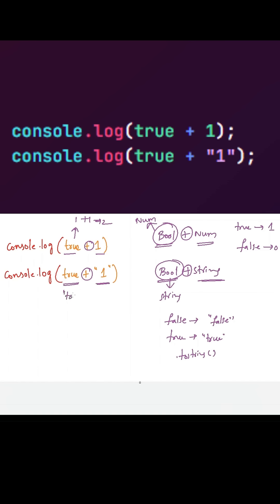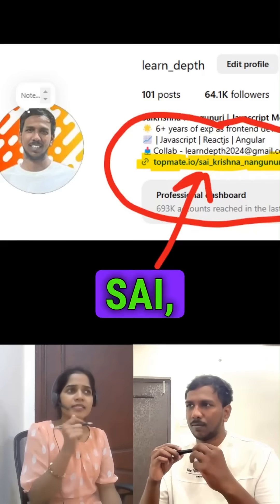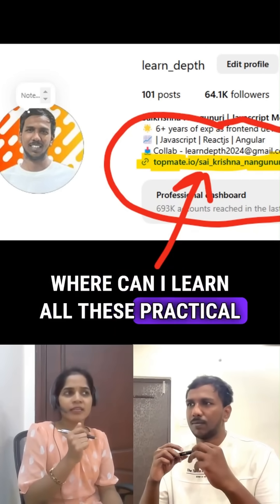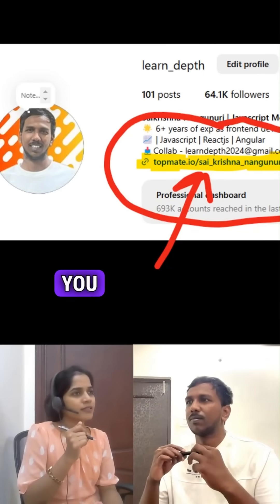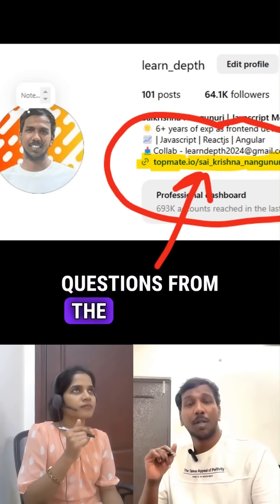a string, so this will be converted into a string. True plus string '1', both will concat together to form string 'true1'. Hey Sai, where can I learn all these practical interview questions and answers? You can get all these interview questions from the link in my bio.